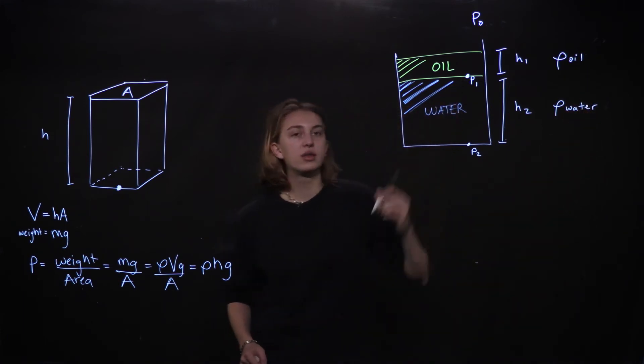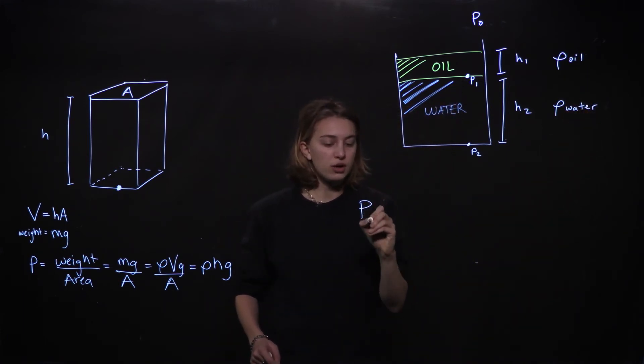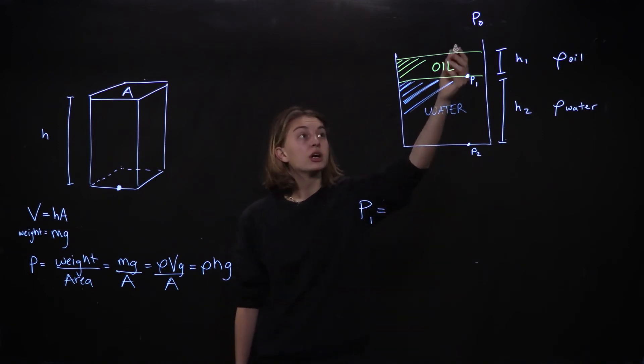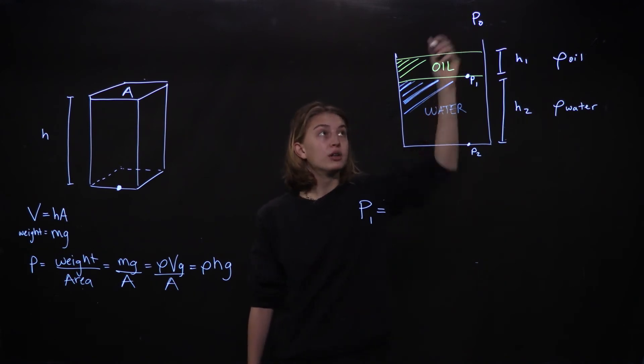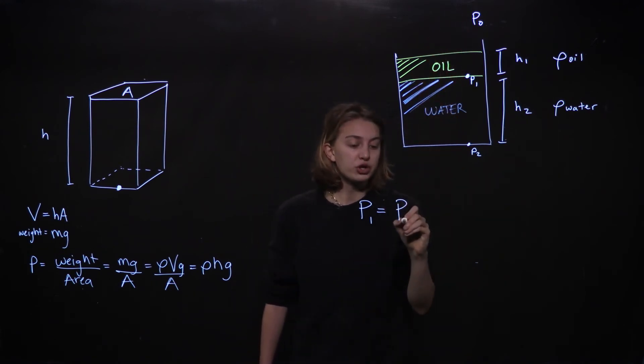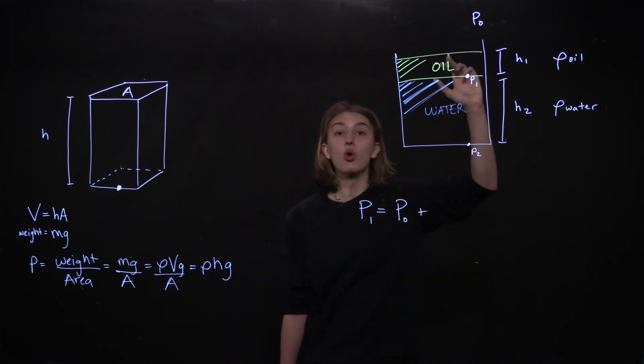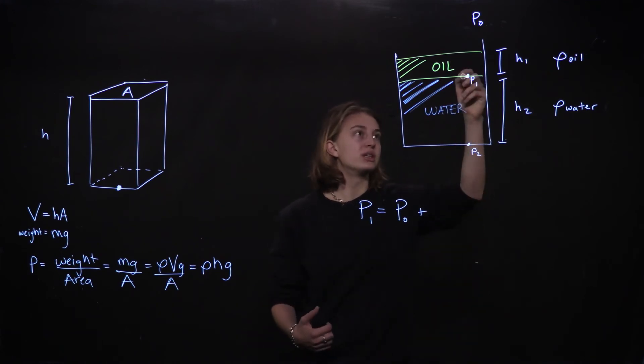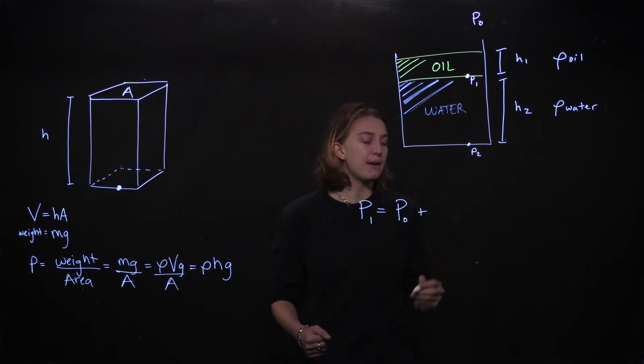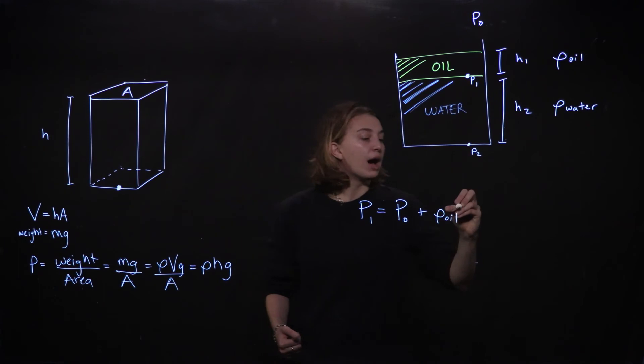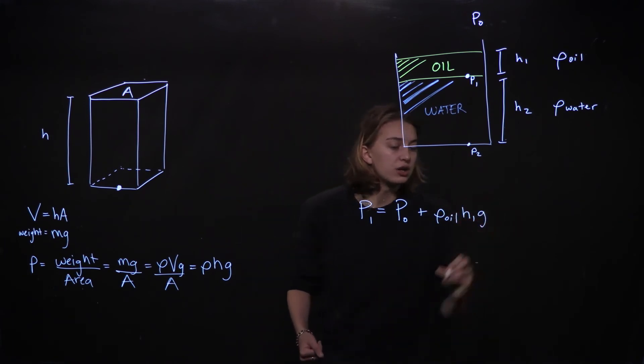So let's start with pressure at position one P1. Like I said the starting pressure at the top of this column of oil is the pressure from the atmosphere. But we also need to account for the pressure of the oil itself that it imposes on this point P1. And that is the density of the oil, the height of that column H1, and the acceleration due to gravity.